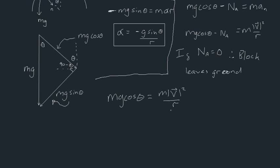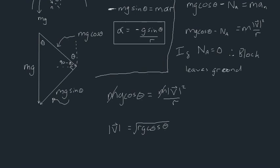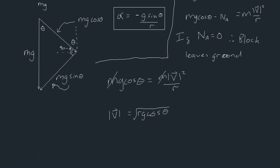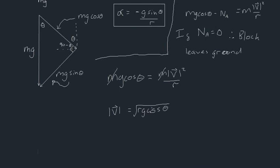This becomes a matter of algebra. Dividing both sides by mass m: v² = r·g·cosθ. Taking the square root: the minimum velocity needed for the block to leave the surface at point A is v = √(r·g·cosθ).